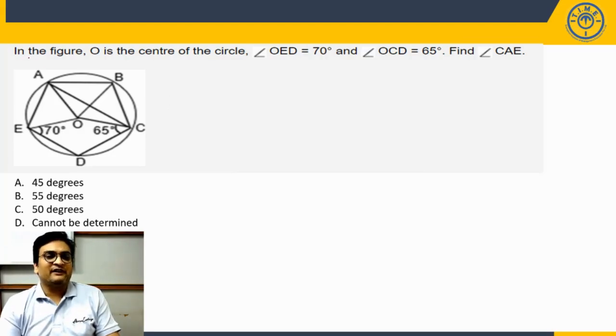The question says in the figure O is the center of the circle. Angle OED, which is highlighted here, is 70 degrees. Angle OCD, this one, is 65 degrees. Now the question is find angle CAE. We have to find this angle. What is this angle going to be? Let us try to think about ways of getting to the answer in this case.